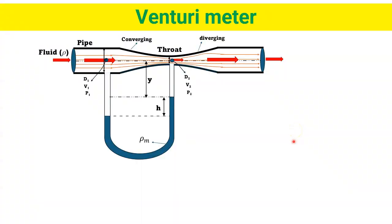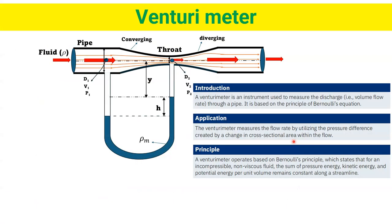Today I will talk about Venturimeter. A Venturimeter is an instrument used to measure the discharge, that is volume flow rate, through a pipe. It is based on the principle of Bernoulli's equation. The Venturimeter measures the flow rate by utilizing the pressure difference created by a change in cross-sectional area within the flow.